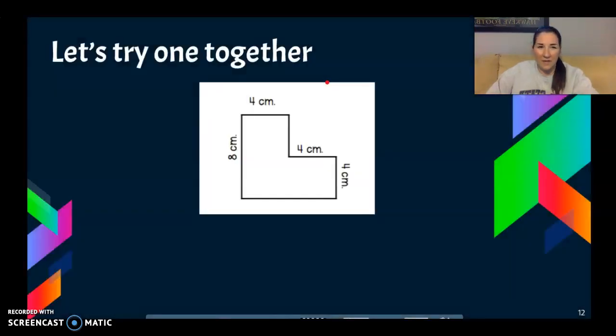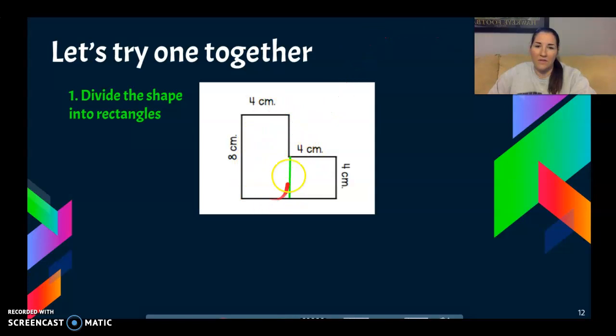Let's try one together just so we can see what that looks like a little bit quicker. So again, I have this kind of irregular shape. I have a couple of steps we're going to take. The first thing is we're going to divide the shape into rectangles. So where would you divide this? You could divide it in a couple different places, but I'm going to choose to divide it here. So I see that I have two different rectangles or a rectangle and a square that I can now find the area of. My next step is to find the area of each of those rectangles.